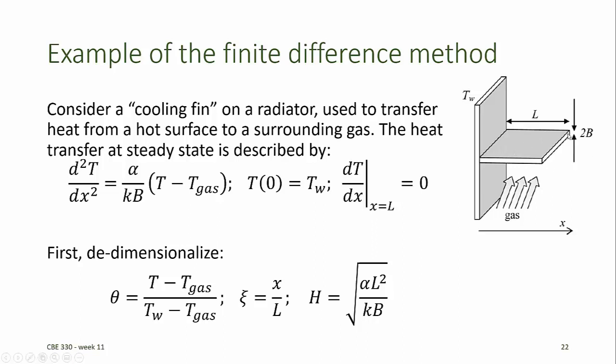If the fin is long compared to its thickness, then most of the heat transfer occurs on the upper and lower surfaces, and there is very little heat transfer to the gas at the far edge of the fin. That means we can approximate the flux of thermal energy to the edge of the fin as being equal to zero. If the flux of thermal energy to the edge of the fin is zero, then the gradient in temperature must be zero at x equals L. That gives us a Neumann condition at x equals L, and we have a Dirichlet condition at x equals zero where the temperature of the fin is assumed to be equal to the wall temperature.